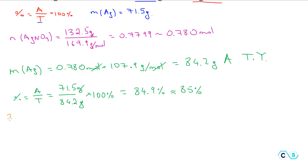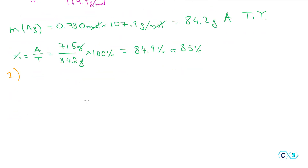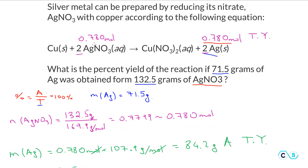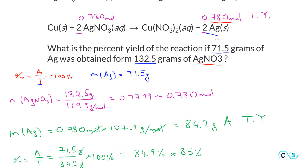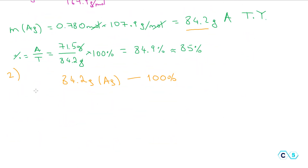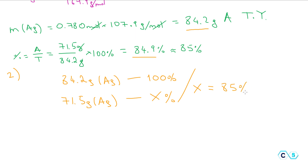There is also a slightly different approach — a second method. We can write that 84.2 grams of silver corresponds to 100 percent of the reaction, since in theory we expected 84.2 grams based on the mole calculations. But we actually obtained 71.5 grams of silver, which corresponds to x percent. Solving for x gives us exactly the same result: about 85 percent yield.